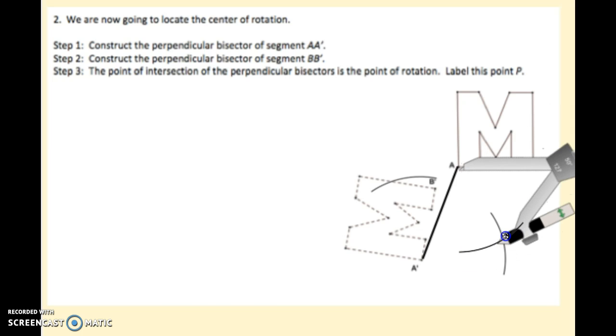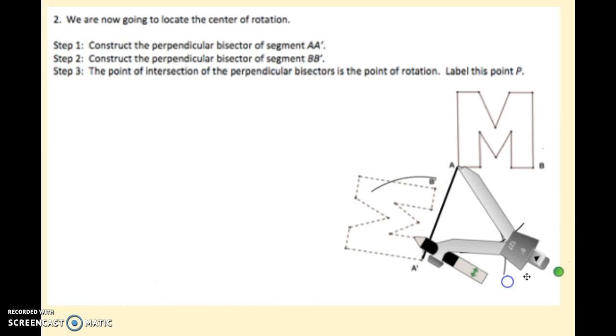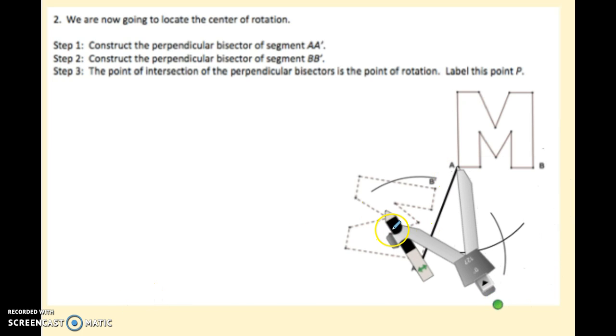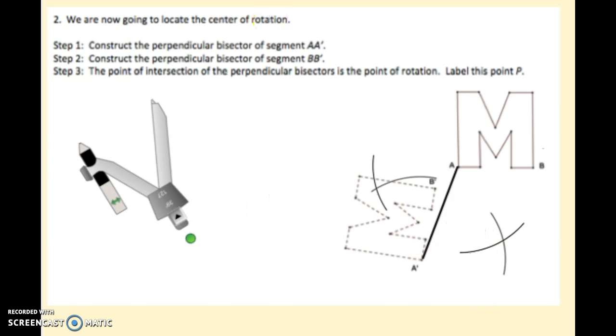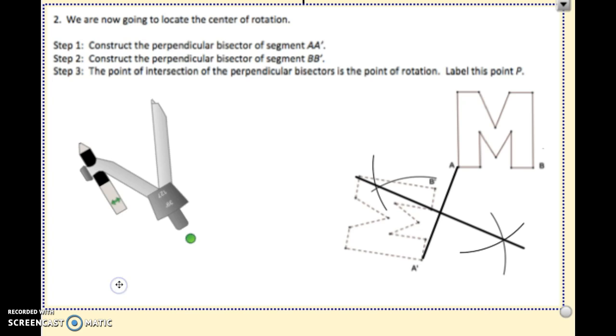Keeping it the same distance open, I'm going to swing an arc above the segment and swing an arc below, just rotating this around and getting that intersection point. The perpendicular bisector is going to be the line that connects the two intersection points, so that's going to go from there to about there. This is my perpendicular bisector for line segment A, A prime.